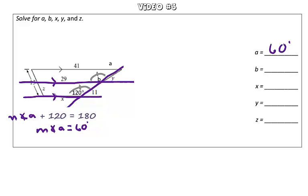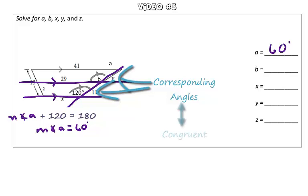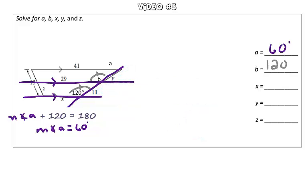we can see that B and 120 are actually corresponding angles, which means that they have the same measurement, which is something that we learned in our previous unit. So therefore, the measure of angle B has to be 120 degrees, since they are corresponding angles.